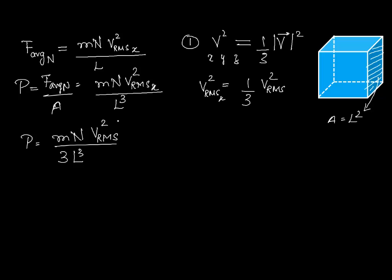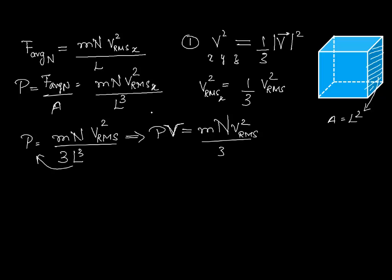That is the famous equation of kinetic theory of gases: PV = Nmvrms²/3, where N is the number of molecules and m is the mass of each molecule. Don't confuse the V for volume with velocity — this V is volume.